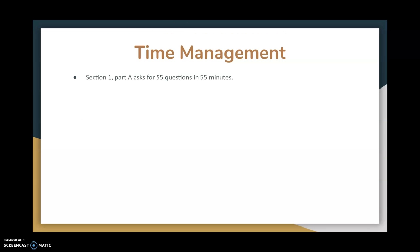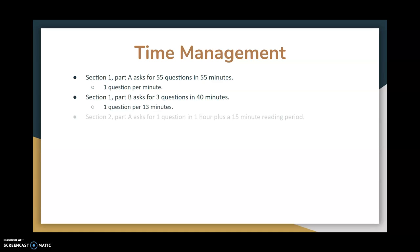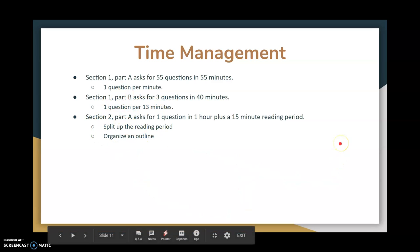Time management is important. Section one, part A is 55 questions in 55 minutes — that's one question per minute, so practice until you can hit that pace without rushing. Section one, part B is three short-answer questions in 40 minutes — that's about 13 minutes per question. For section two, part A, the DBQ has a 15-minute reading period: use it to skim sources, annotate, choose which ones to use, and organize an outline.